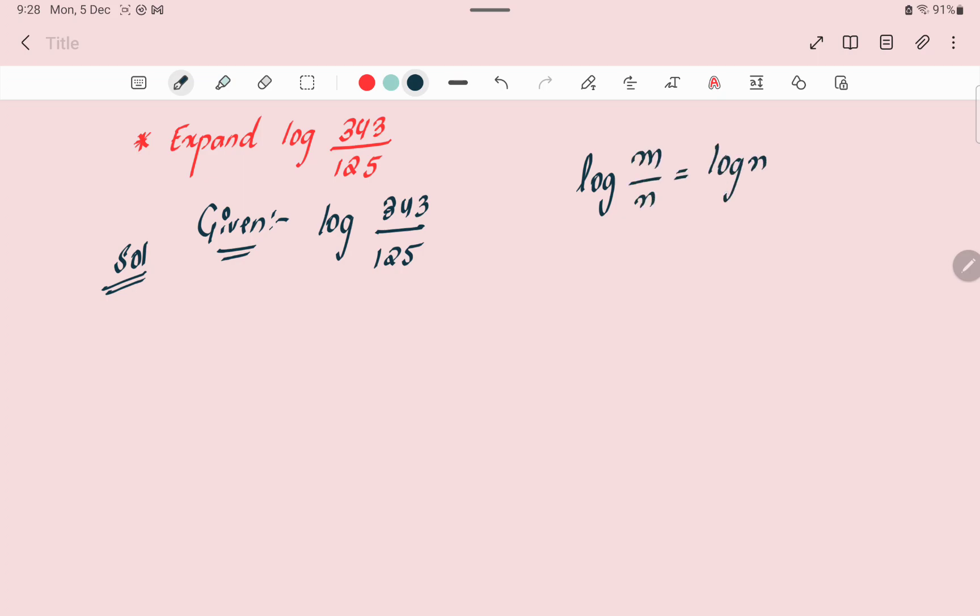Same in this problem: log 343, the division sign changes into subtraction, log 125. Now we have to take out the prime factorization of 343 and 125. So 343, we'll use 7. 7 times 49 equals 343.